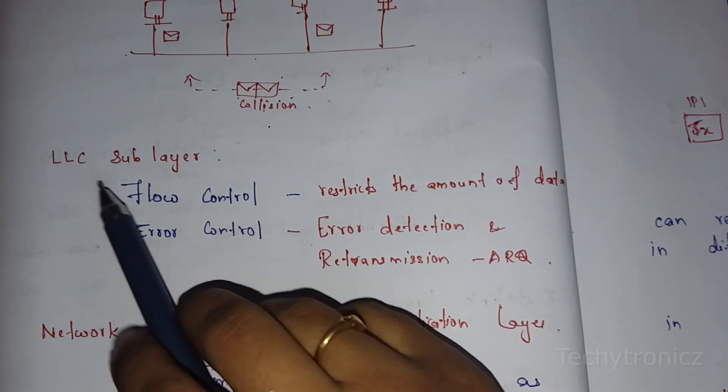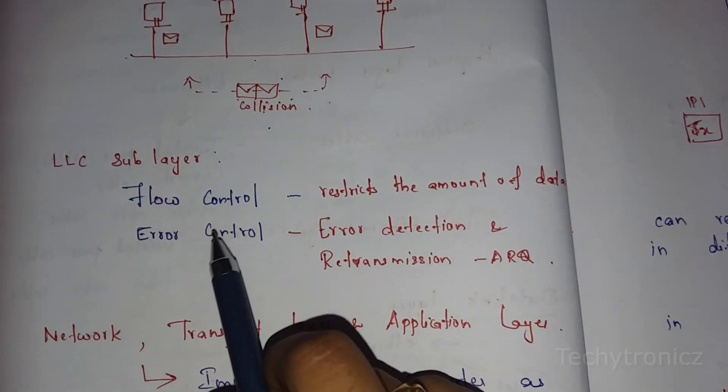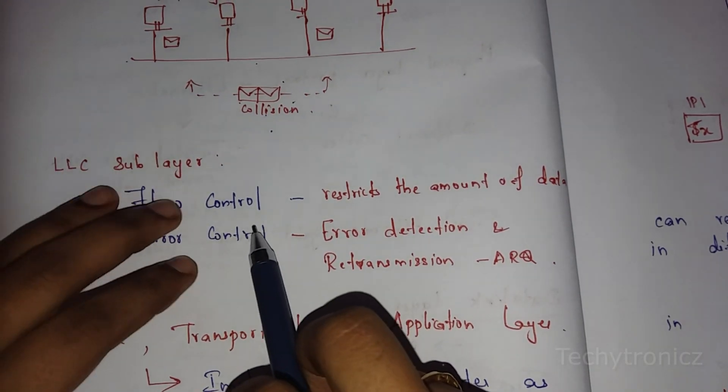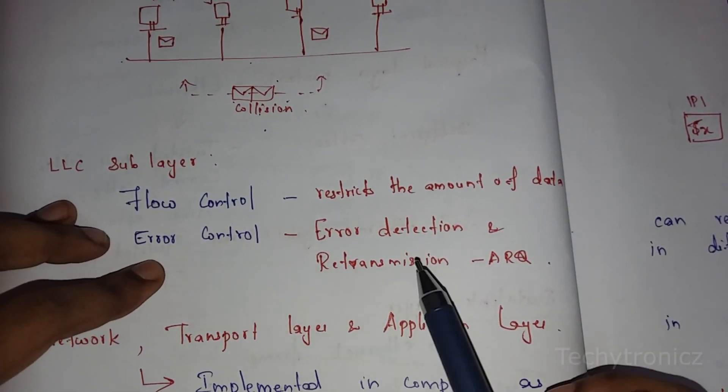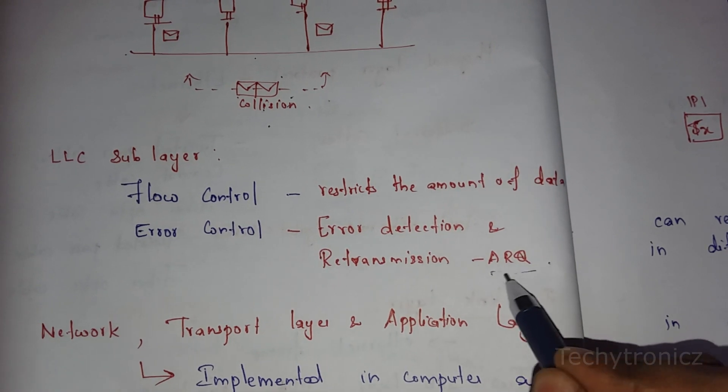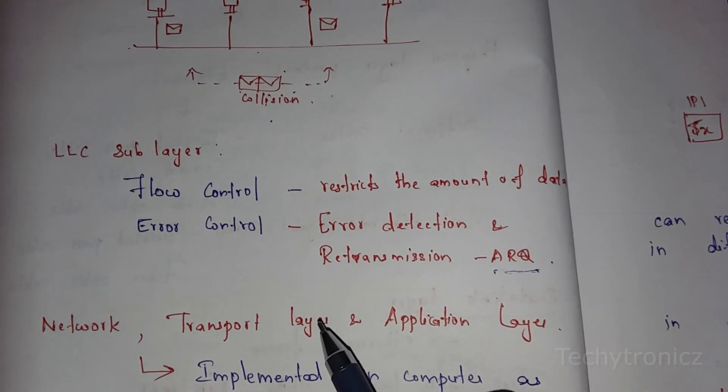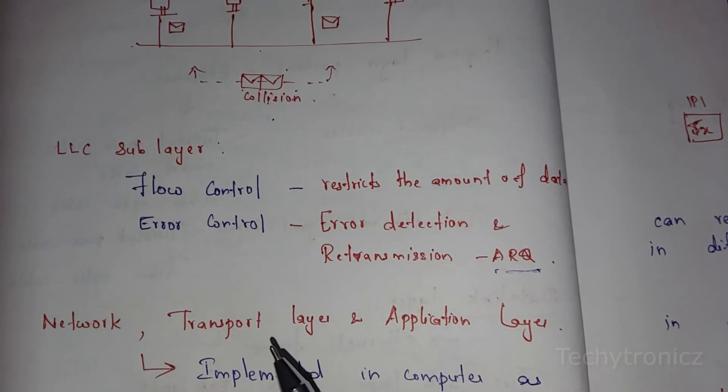The next sublayer is the LLC sublayer, which handles flow control and error control mechanisms. Flow control restricts the amount of data, while error control uses automatic repeat request to retransmit packets or data when needed.